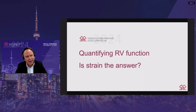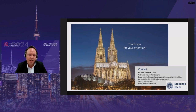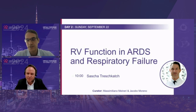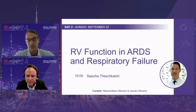So, to return to my first slide: is strain the answer for quantifying right ventricular function? It may not be the answer to all of our questions, but it can become an important tool for clinical decision making in the future in the perioperative assessment of right ventricular function. Thank you for your attention. Thank you very much, Dr. Labus — that was a great presentation, and thank you for highlighting the role of strain in RV assessment, as it is increasingly used in our regular operating rooms.